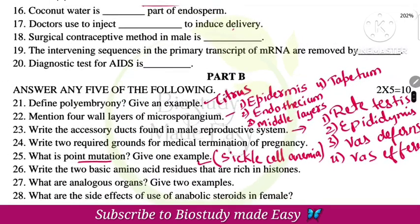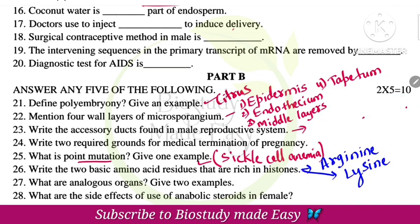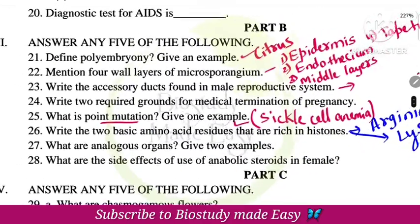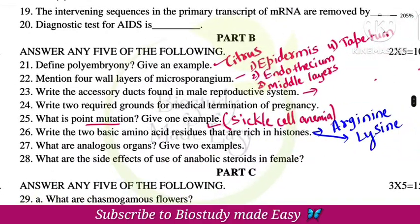Write two basic amino acid residues that are rich in histones: arginine and lysine. What are analogous organs? Give two examples — analogous organs have different origins but perform similar functions.